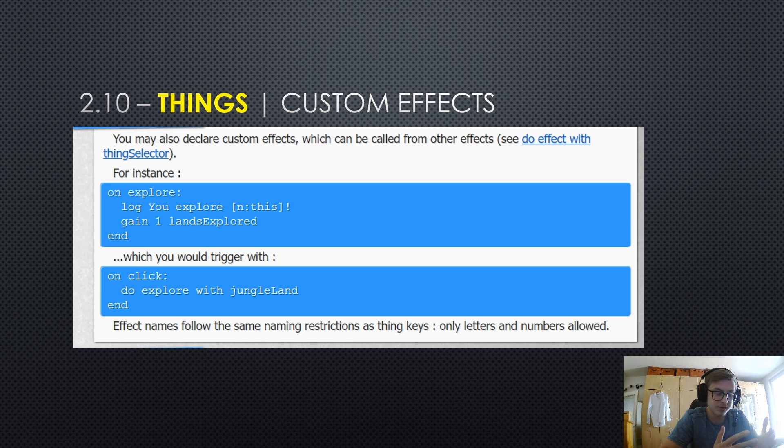And this is extremely powerful because you can nest these effects inside of each other up to a maximum of 10. And really there are infinite possibilities as to what kind of effects you can create. Here we also can see, do effect with thing selector. In short, basically what this means is, here we can see that on click command, you do explore with jungle land.